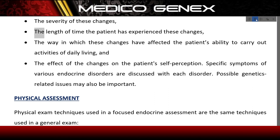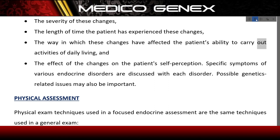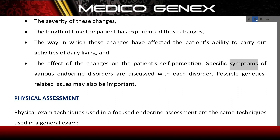The health history should include information regarding the severity of these changes, the length of time the patient has experienced them, the way in which these changes have affected the patient's ability to carry out activities of daily living, and the effect on the patient's self-perception. Possible genetics-related issues may also be important.